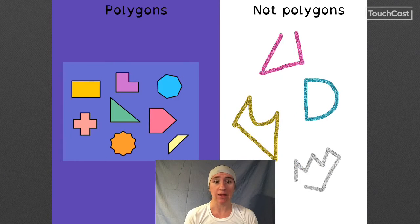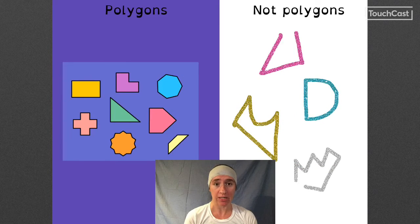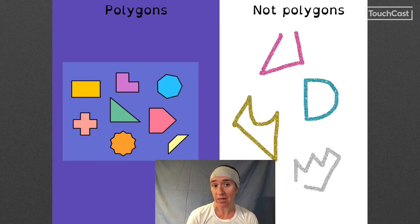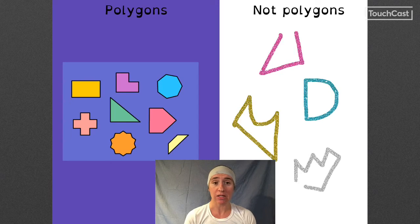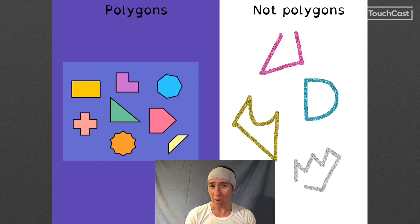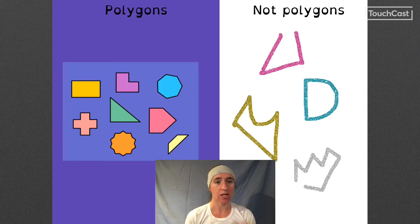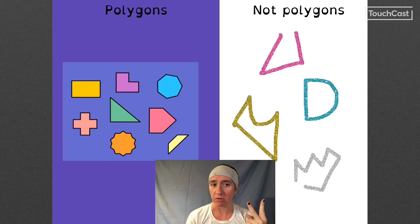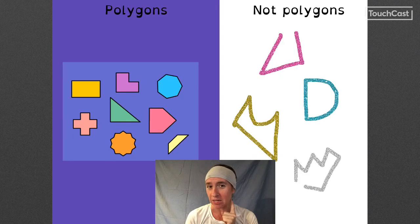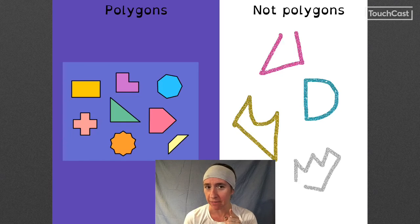When you start to put lines and angles together, you get shapes. But there's specific kinds of shapes that are called polygons. Now look at the two different sides here and see if you can figure out what makes something a polygon versus not a polygon. The hint I'll give you is that two things have to be true for a shape to be considered a polygon. Do you think you have it?